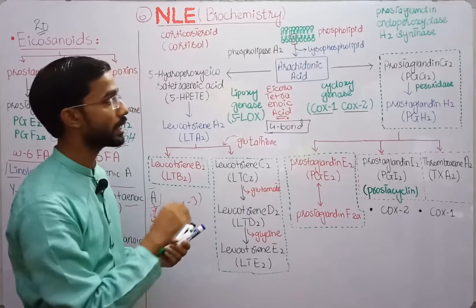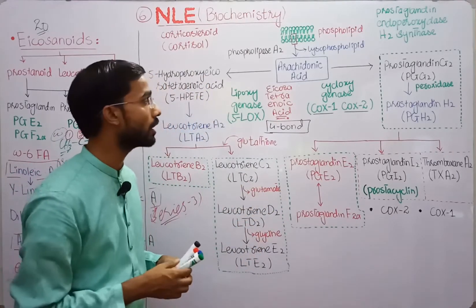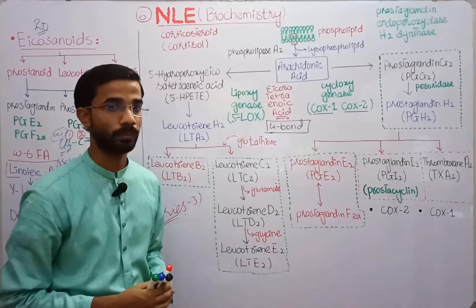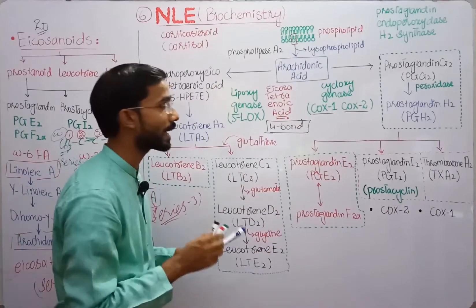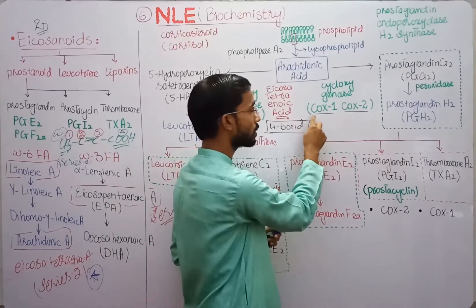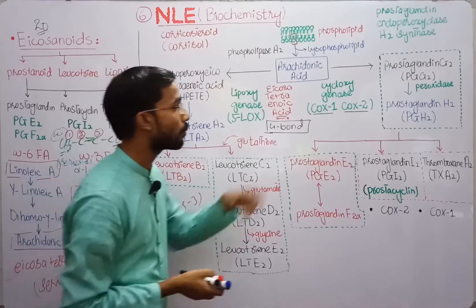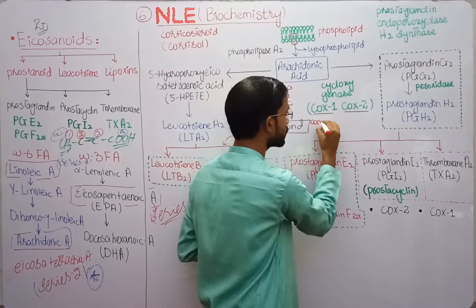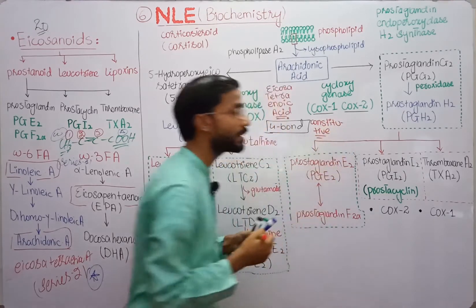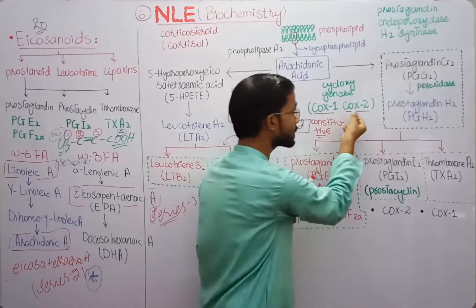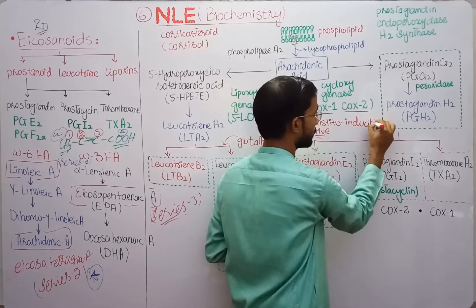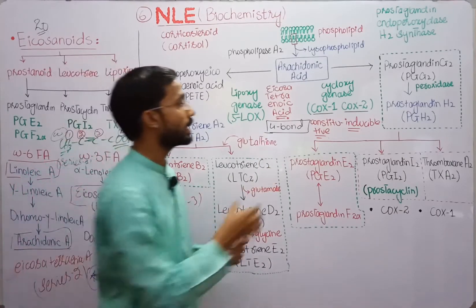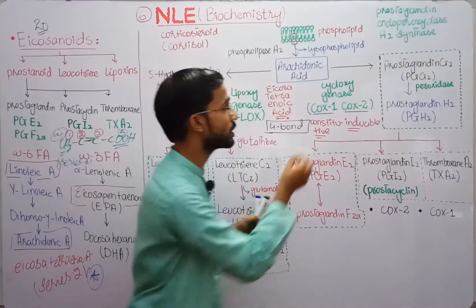If arachidonic acid is cleaved by the enzyme cyclooxygenase, it converts into Prostaglandin G2. There are two isoforms of the cyclooxygenase enzyme: COX-1 and COX-2. COX-1 is constitutive — it means it is continuously produced by the cell. COX-2 is inducible — it is only released in the case of inflammation. This cyclooxygenase enzyme converts arachidonic acid into Prostaglandin G2.